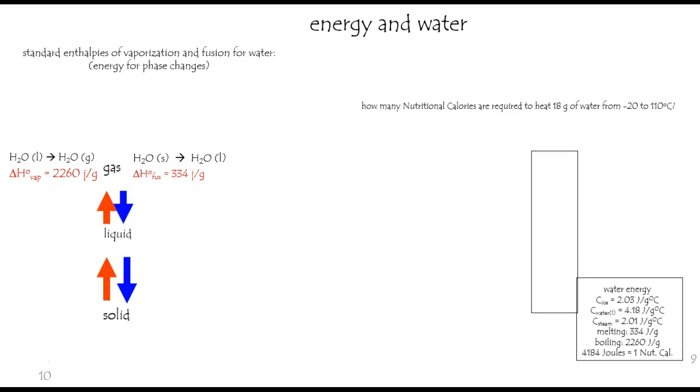Let's make sure we get our signs right. If we're heating things up, that's putting energy in. That's positive, right? That's endothermic. So the enthalpy of fusion of water is a positive 334 joules per gram, also positive for boiling.